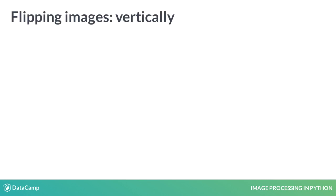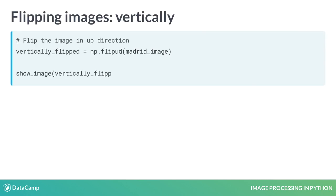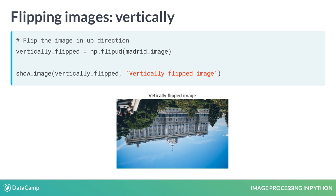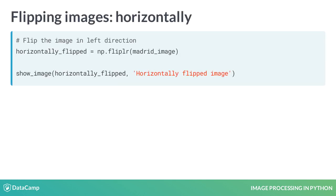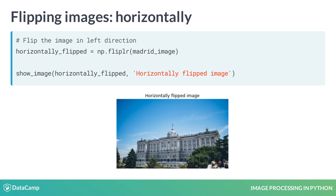We can flip the image vertically by using the flipud method, as you saw in the previous video — we are using the showImage function to display an image. You can also flip the image horizontally using the fliplr method.